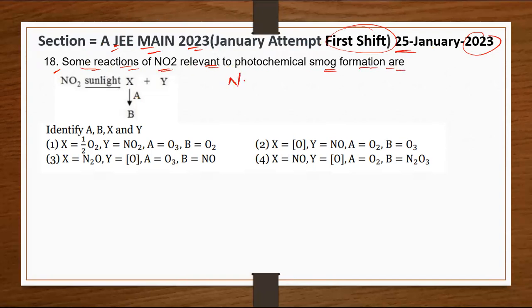Here, NO₂ in the presence of sunlight is reacting and forming two compounds X and Y, which then combine with A to form B.